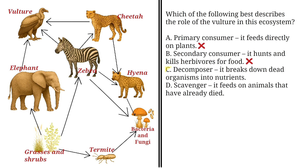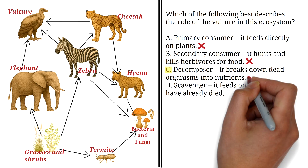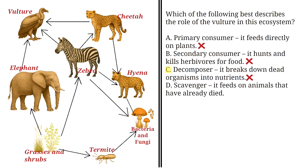C: Decomposer — it breaks down dead organisms into nutrients. This is also incorrect. Unlike bacteria and fungi, which chemically break down their food before absorption, the vulture consumes its food directly using its mouth.